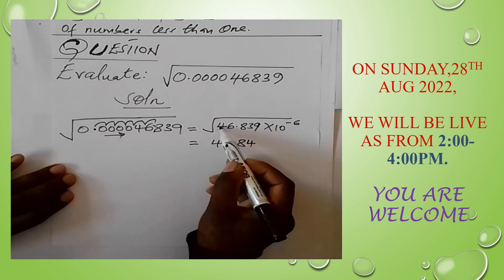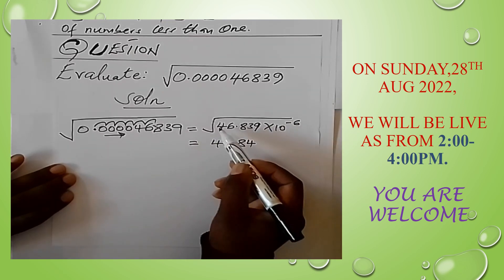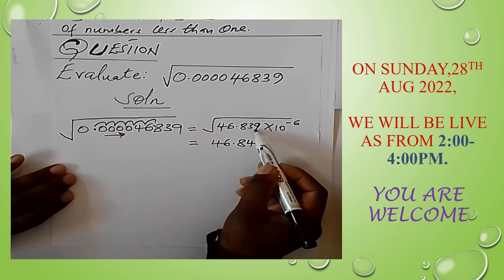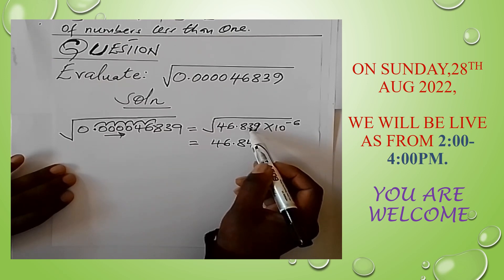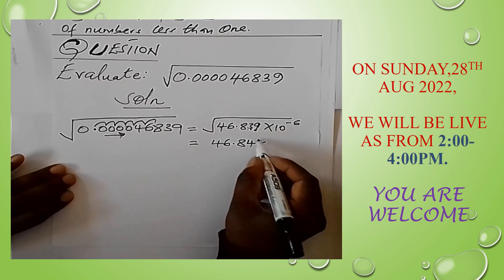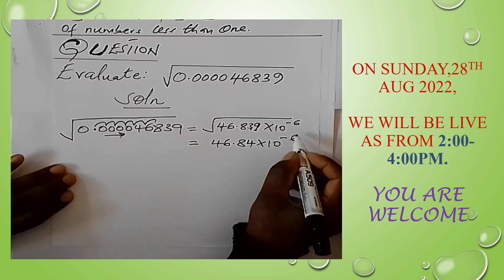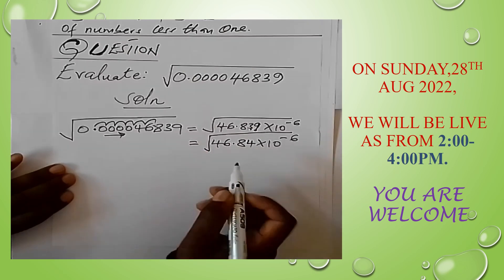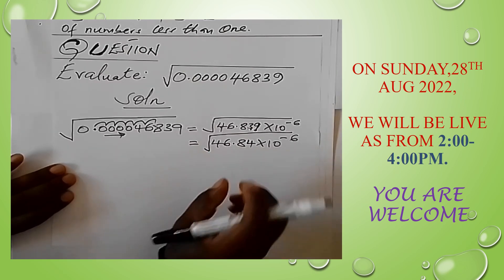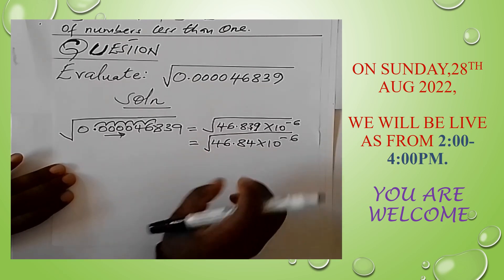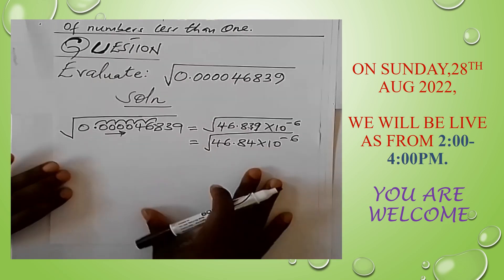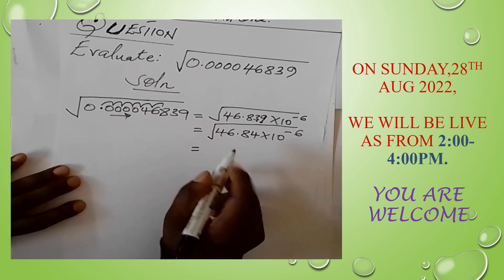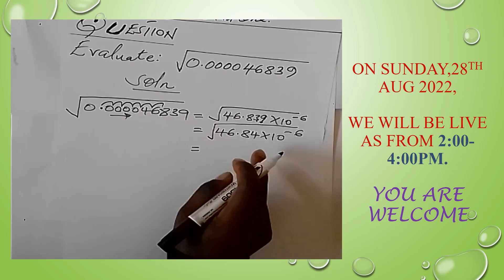Rounding 46.839 to 4 significant figures: the digits are 4, 6, 8, 3 — and we look at the fifth digit, which is 9. Since 9 is more than 5, it rounds the 3 up by 1, giving us 46.84. So we are now finding the square root of 46.84 times 10 to the power minus 6 from our mathematical tables.